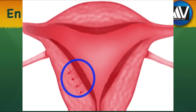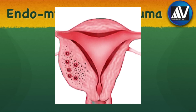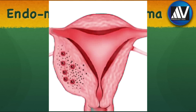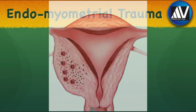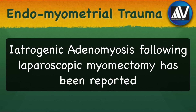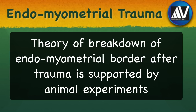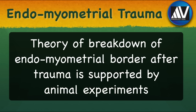Childbirth may also promote invagination of the basal endometrium into the myometrium. Just after delivery, when the full-term uterus with its large surface area of the endometrium or decidua contracts to a cricket-ball-sized uterus, this causes the endometrial glands to get pinched off into the myometrium, losing connection to the basal endometrium. Subsequent growth of these glands and stroma leads to the characteristic pathological features and symptoms of the disease. Iatrogenic adenomyosis following laparoscopic myomectomy, when the myometrium was not sutured in layers, has also been reported. The theory of breakdown of the endomyometrial border after trauma is supported by animal experiments.